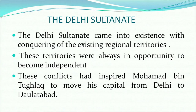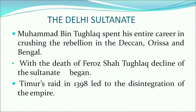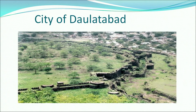The Delhi Sultanate came into existence by conquering these regional territories. Whenever these regional territories got the opportunity to become independent, they tried to do so, leading to continuous conflict. This also inspired Muhammad bin Tughlaq to move his capital from Delhi to Daulatabad, thinking he could control his territory better. The death of Feroz Shah Tughlaq led to the decline of the Delhi Sultanate, and Timur's raid in 1398 led to the final disintegration of the empire.